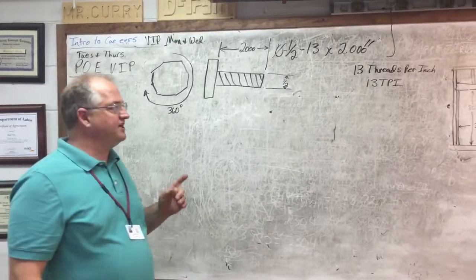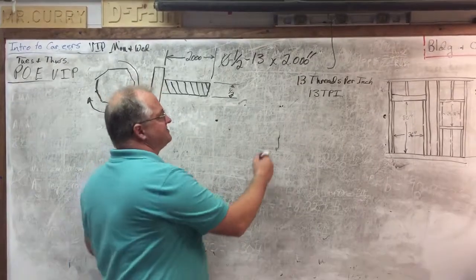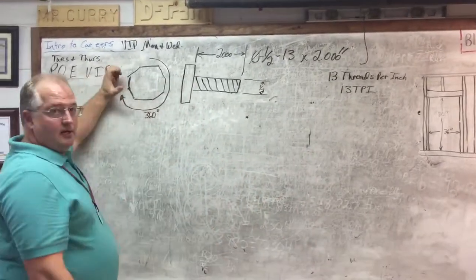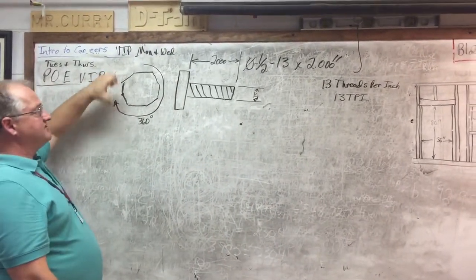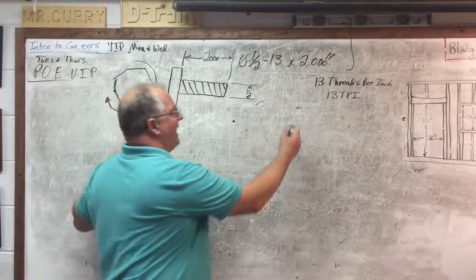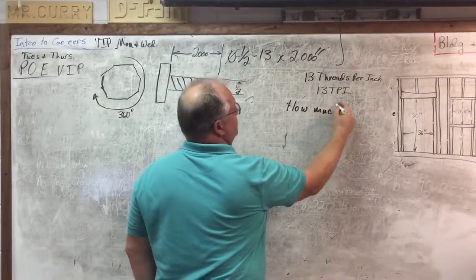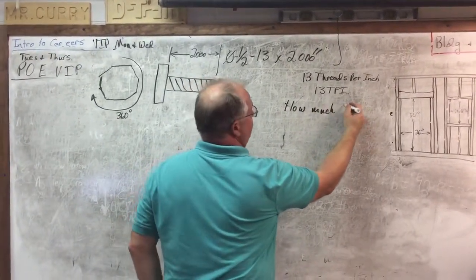All right, so my question here if I've got 13 threads per inch is, and I'm going to put a wrench on this and turn it one full rotation to 360 degrees, how much linear distance is that going to move that thread?